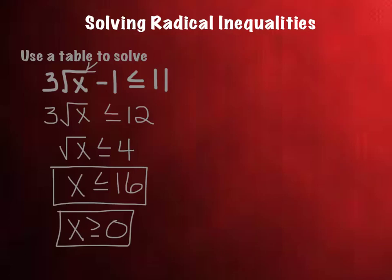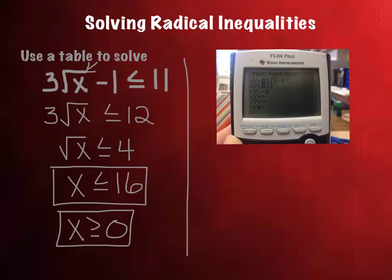So if I say use a table, just go in your calculator and punch it into y equals. You can go ahead and put the left side and the right side each in their own. So 3 square root of x minus 1 can go in y1, and 11 can go in y2. And then hit second table to look at the table.